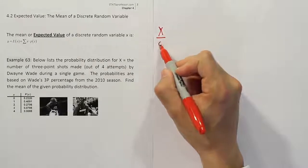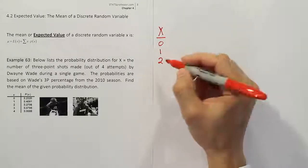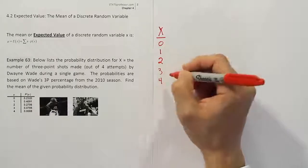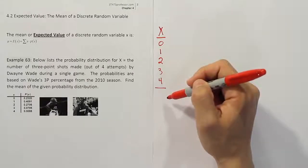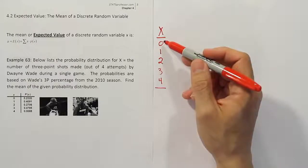So these are three-point shots, and it's zero, one, two, three, and four. That's the possible outcomes, obviously. He can't make more than four shots if he's only taking four attempts, and he certainly couldn't make less than zero.